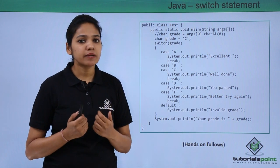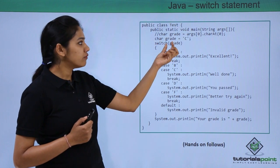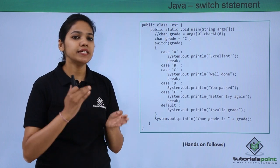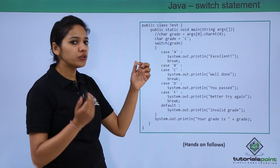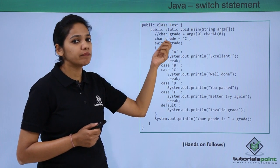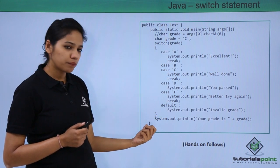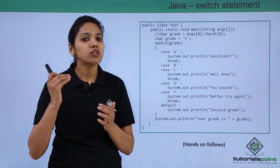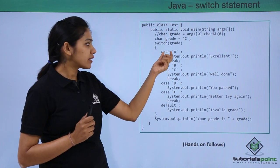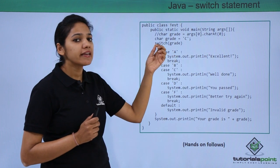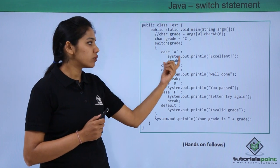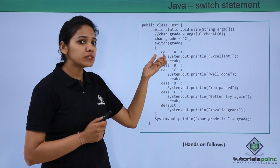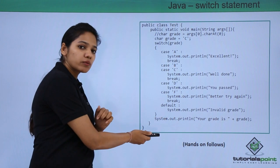In this example we use a switch statement with certain cases. A class is created with a variable of char type named 'grade' with value 'C'. To write a switch statement, you write the 'switch' keyword, then the variable name in brackets, then open and close braces. Inside, you write case statements starting with the keyword 'case' in lowercase, followed by the case value in single quotes — for a char type — then a colon. The colon is necessary, otherwise it throws an error. For case A: print the corresponding statement, then break. The break ensures no further cases are executed.